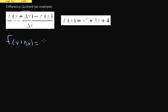Now I'm going to just plug in wherever I see an x, I'm going to put in x plus delta x. And so I have x plus delta x squared plus 3 times x plus delta x plus 4.